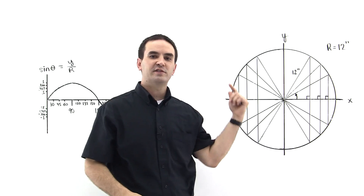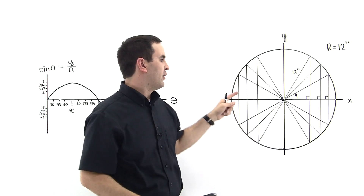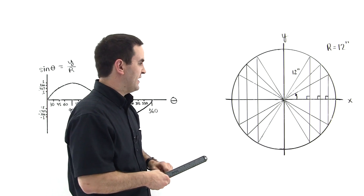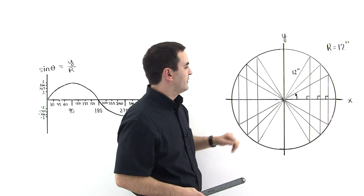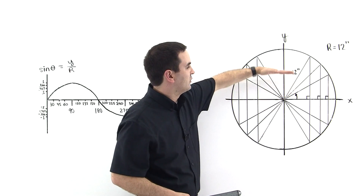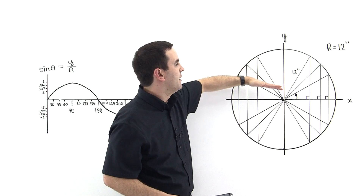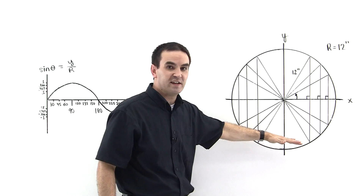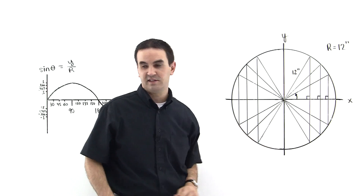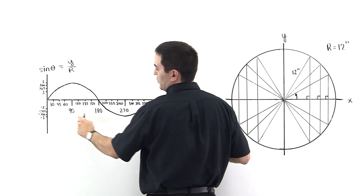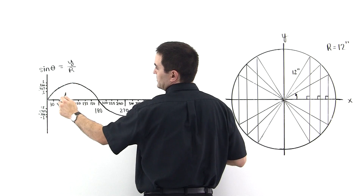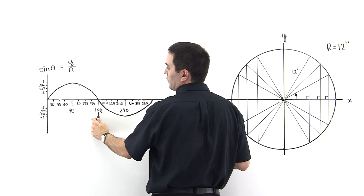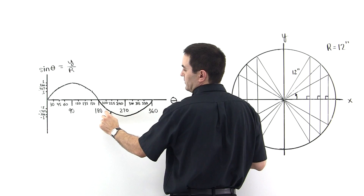We progress around the circle plotting this ratio for all the different triangles. The one catch is that when we get to 180 degrees, we go negative, because all of the triangles above the x-axis had positive heights, but the triangles below the x-axis have negative heights. So from 0 to 180 we have positive values, and after 180 we have negative values.